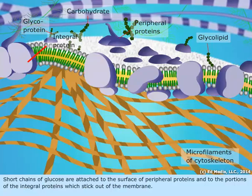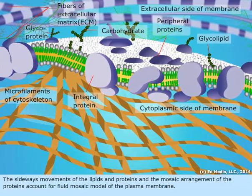The sideways movements of the lipids and proteins and the mosaic arrangement of the proteins account for the fluid mosaic model of the plasma membrane.